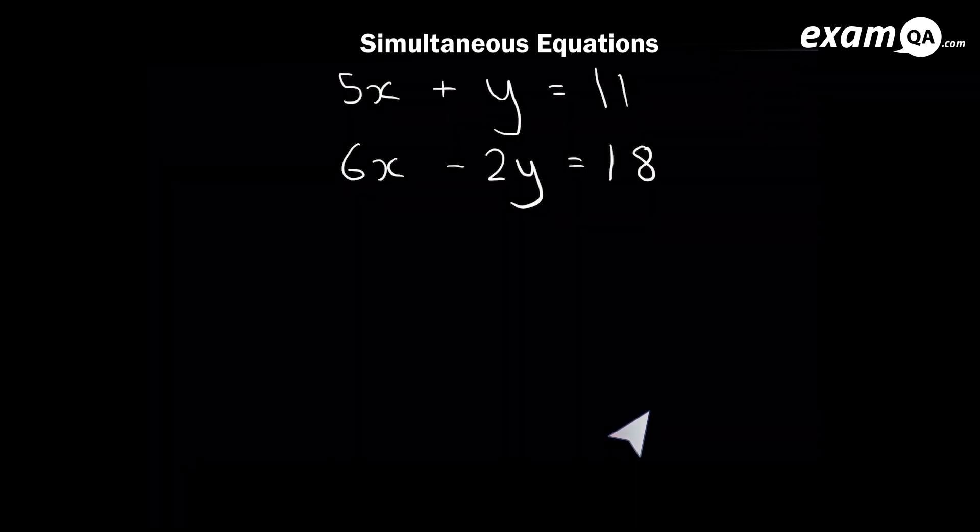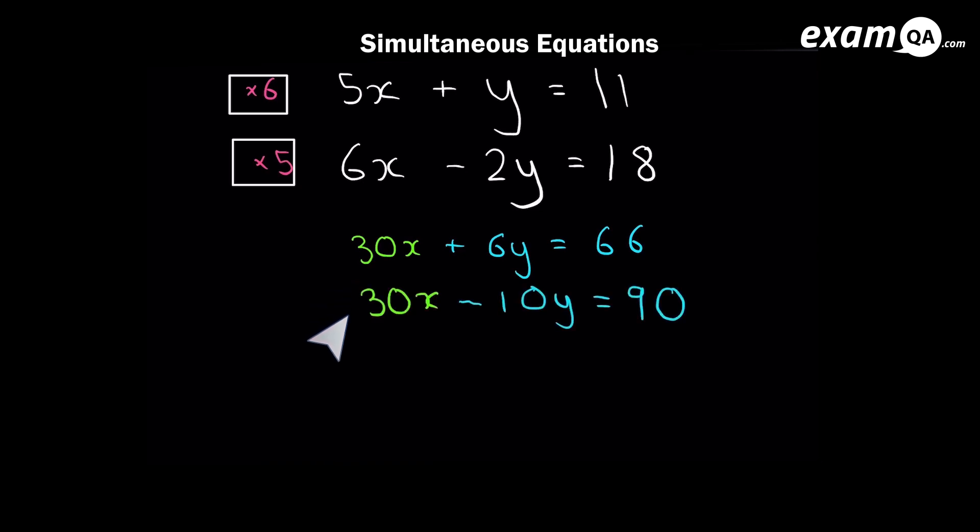So here's our third example. Now looking at x's, we've got 5x and 6x. We're just going to multiply them by each other. So the 5x, I'll times it by 6. And the 6x, I'll times it by 5. So here I've multiplied my first equation all by 6. And this is my second equation times by 5. Just be careful the minus 2y. When you times that by 5, it's minus 10y.